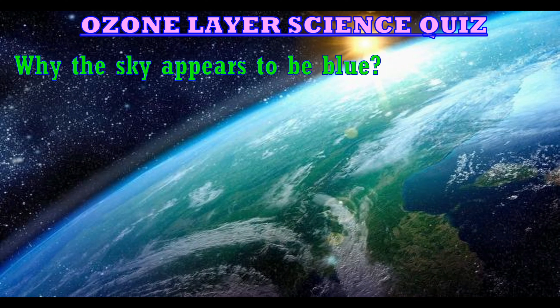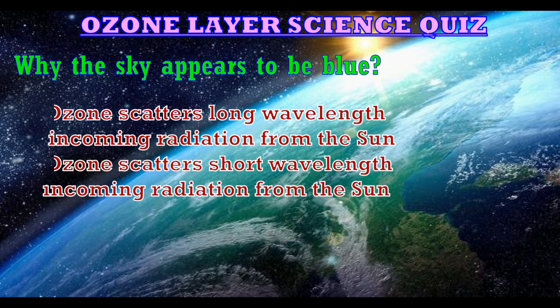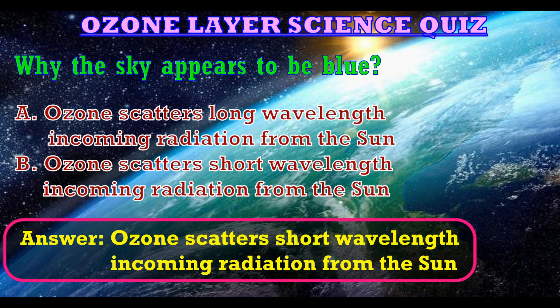Next question is: why does the sky appear to be blue? The options are: A. Ozone scatters long wavelength incoming radiation from the sun, B. Ozone scatters short wavelength incoming radiation from the sun. The correct answer is: ozone scatters short wavelength incoming radiation from the sun.